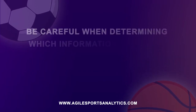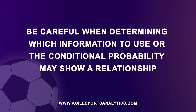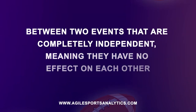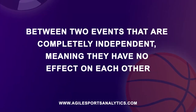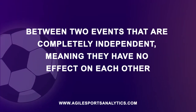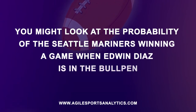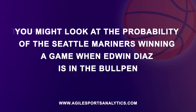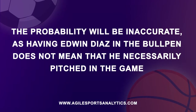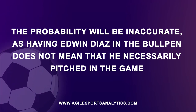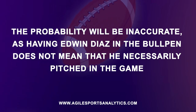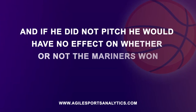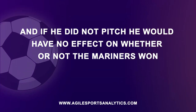However, you must be careful when determining which information to use, or the conditional probability may show a relationship between two events that are completely independent, meaning they have no effect on each other. For example, you might look at the probability of the Seattle Mariners winning a game when Edwin Diaz is in the bullpen. The probability would then be inaccurate, as having Edwin Diaz in the bullpen does not mean that he necessarily will pitch in the game. And if he did not pitch, he would have no effect on whether or not the Mariners won.